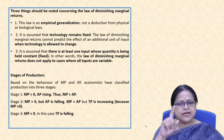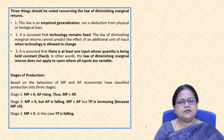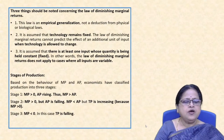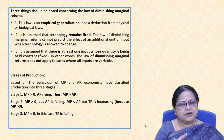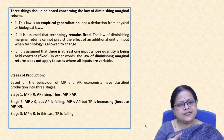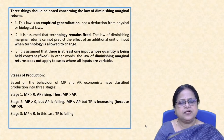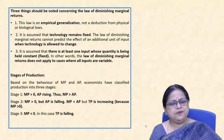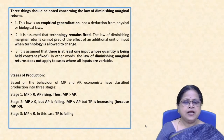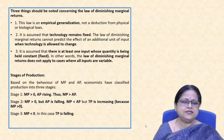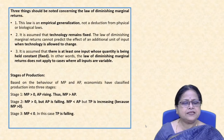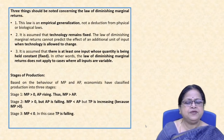Stage 1: Marginal product is positive and greater than zero, AP is rising, and thus marginal product is greater than average product. Stage 2: Marginal product is positive but AP is falling; marginal product is less than AP, though TP is still increasing. Stage 3: MP is less than zero, and TP is falling.